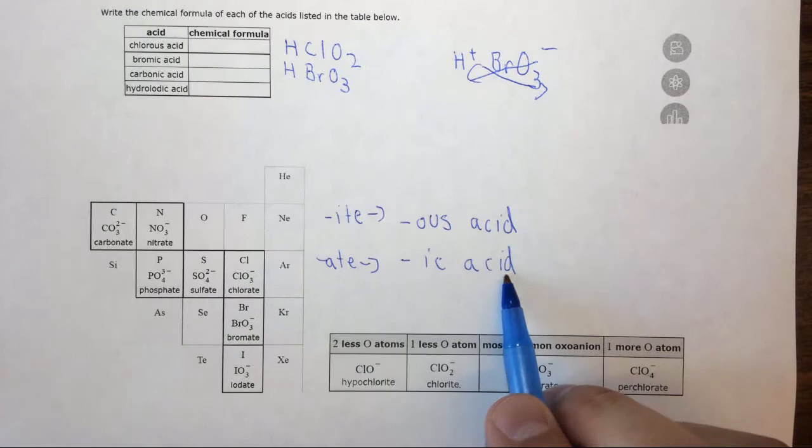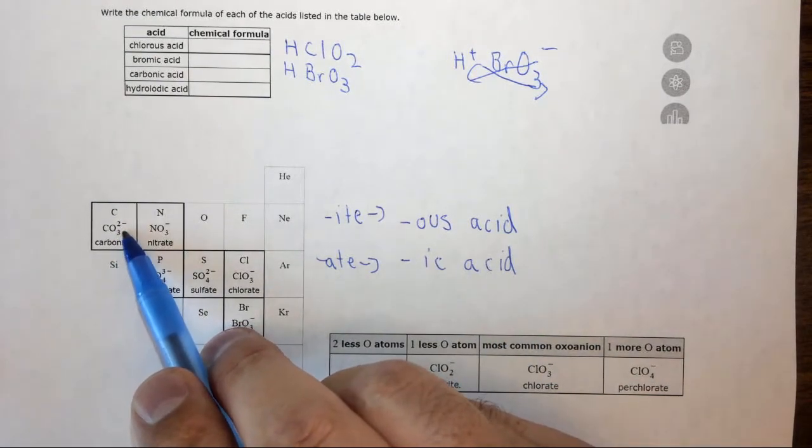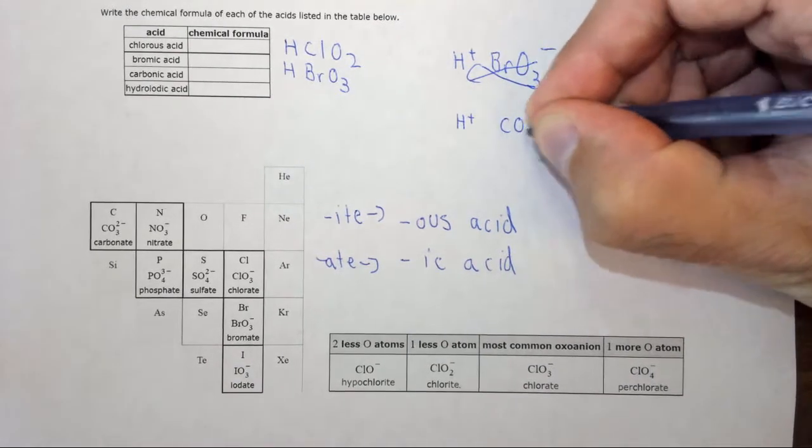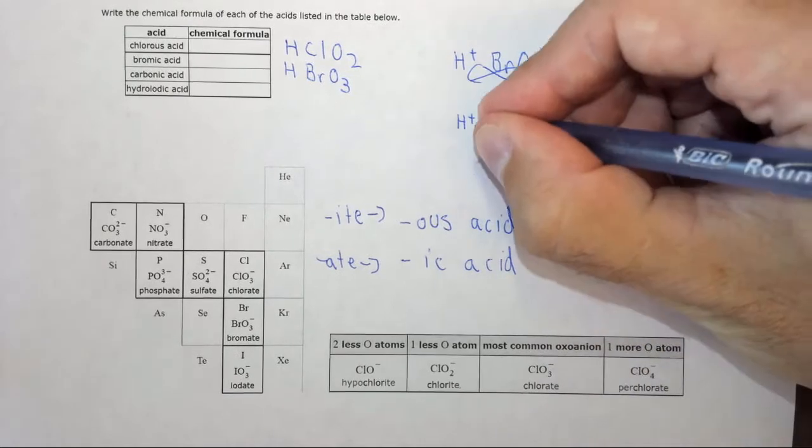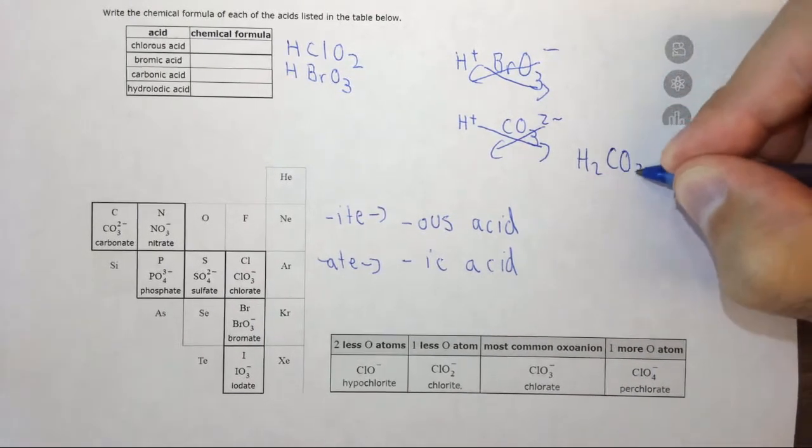Carbonic acid, since it's an -ic acid, it comes from carbonate. In this case it's CO3 2 minus. So you can think of this as H plus CO3 2 minus, cross them, and you get H2CO3.